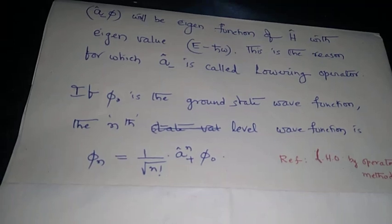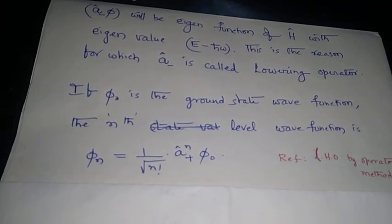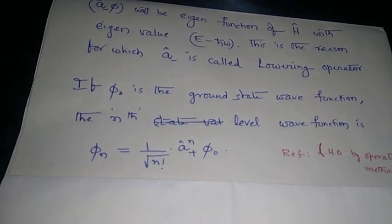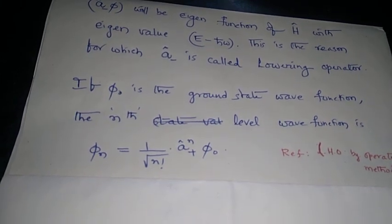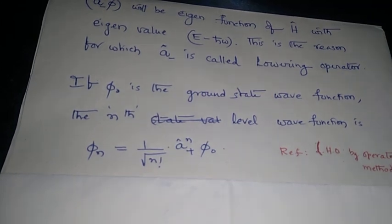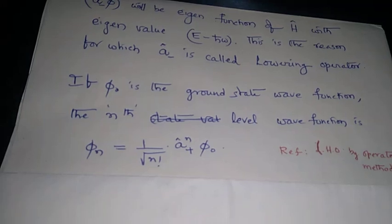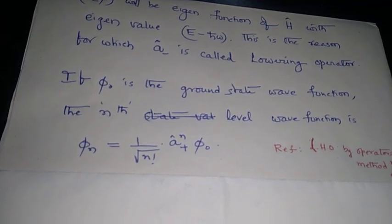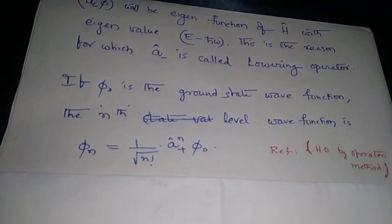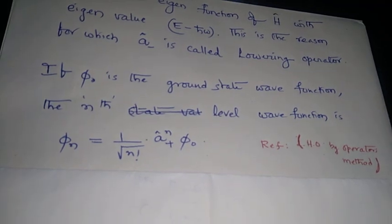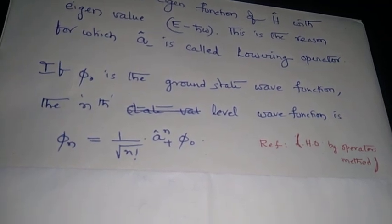If phi sub 0 is the ground level wave function for the linear harmonic oscillator, the wave function for the nth level can be written as phi sub n equals 1 over square root of n factorial into A plus raised to n into phi 0. The details of how we get this can be found in my video on harmonic oscillator by operator's method.